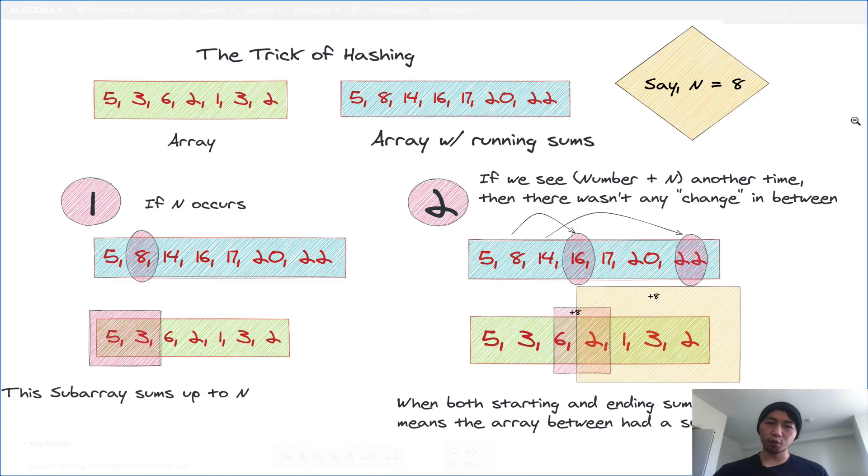It helps to look at one more visual. So let's look at this diagram in front of us. Let's say we have the input array 5, 3, 6, 2, 1, 3, 2, and the target sum of 8. If we were to calculate a sum so far array, so meaning an array with running sums. So we start at 5, and then 5 plus 3 is 8, so the next element is 8. And then 8 plus 6 is 14, so we have 14 so far. And then add 2 more, and we have 16. And so we have this array with running sums. And this will prove to be very helpful, given the intuition that we are starting to develop.